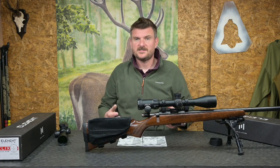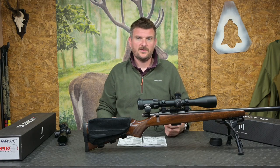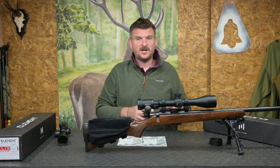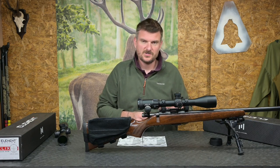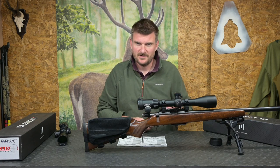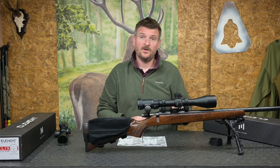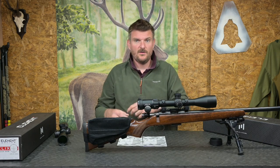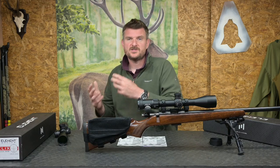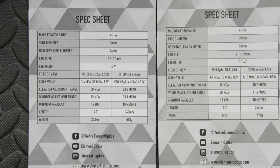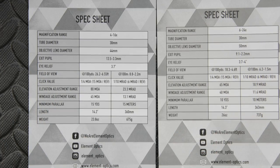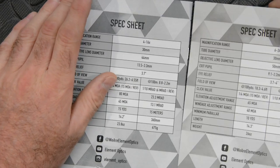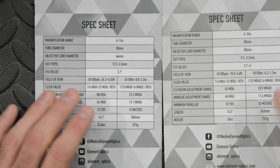These are all factors to consider when thinking about what the scope is used for. On a hunting scope, generally a larger exit pupil, more light transmission, and greater image brightness in low light is very beneficial. Whereas on a target scope you've got a bit more time and need a bit more precision. But there is quite a lot of overlap between the two.